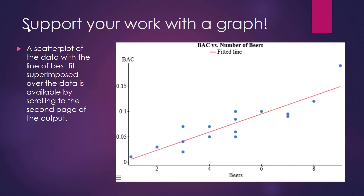A scatterplot of the data with the line of best fit superimposed over the data is available by scrolling to the second page of the output, as I showed you before. The equation of this line is Y equals negative 0.0127 plus 0.0180X.